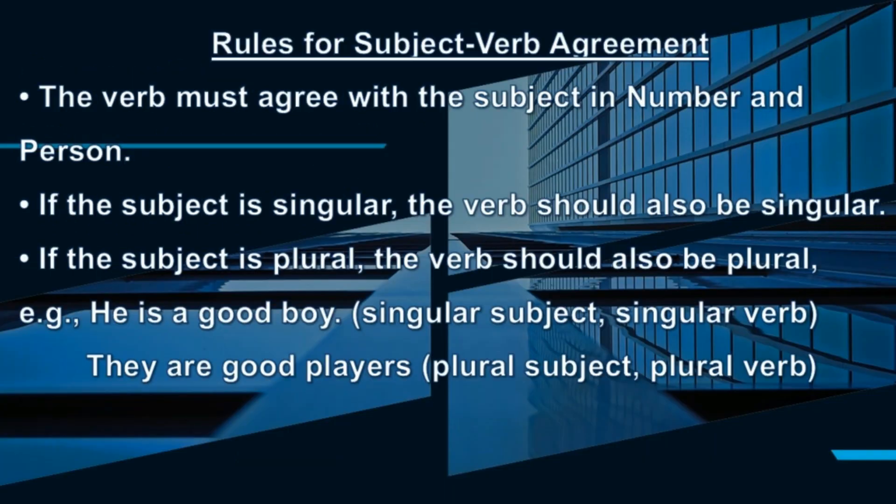Rules for Subject-Verb Agreement. The verb must agree with the subject in number and person. If the subject is singular, the verb should also be singular. If the subject is plural, the verb should also be plural. Example: He is a good boy — singular subject, singular verb. They are good players — plural subject, plural verb.